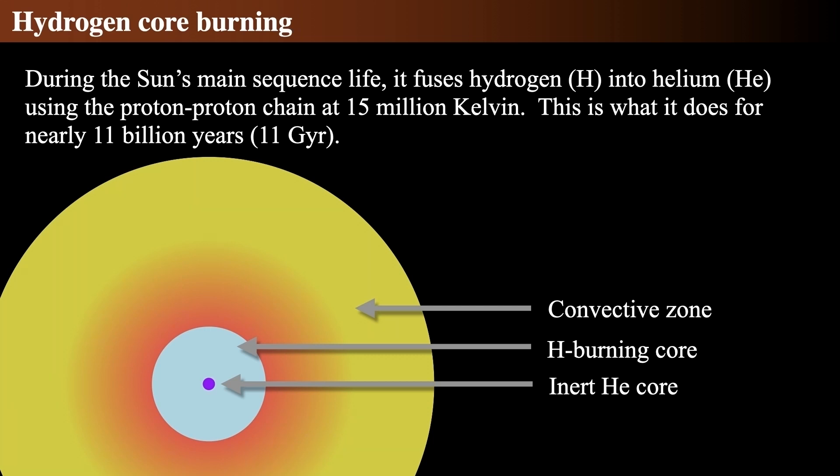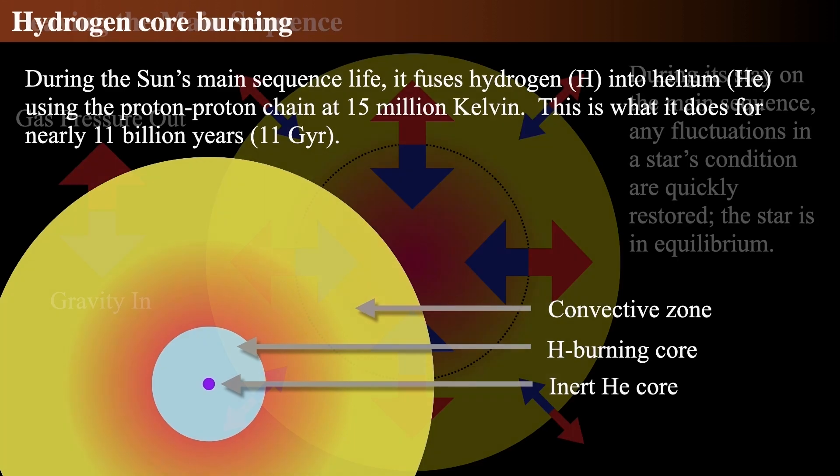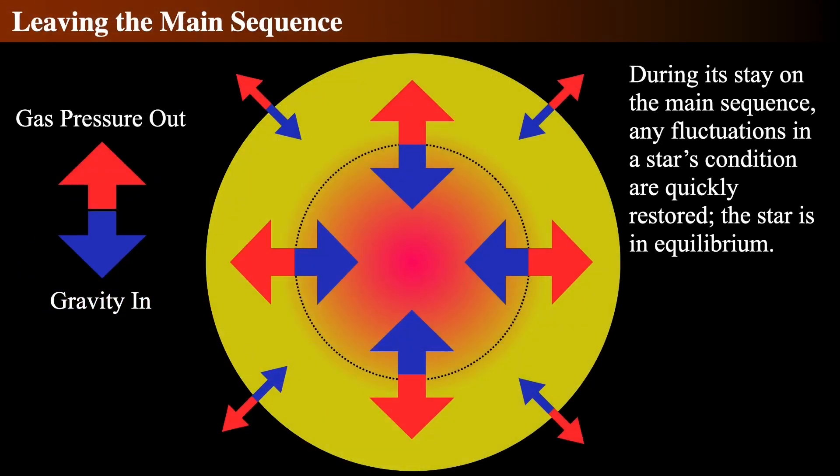What's down in the core stays in the core. Of course, at the top of the convective zone, that's where we see granules and supergranules in the photosphere, as well as all the active regions on the surface, what we call the surface of the sun.